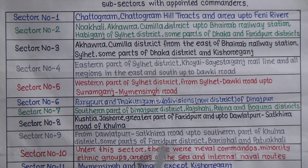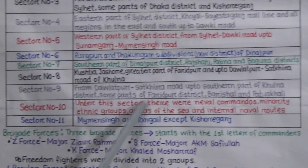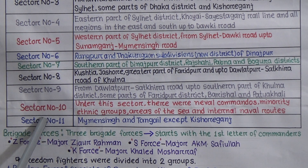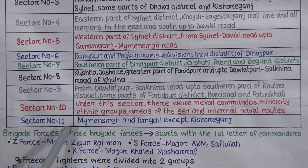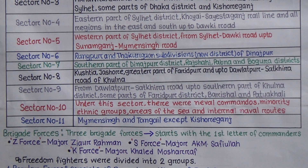Sector 10 included naval commandos, minority ethnic groups, areas of the sea, and internal naval routes. Sector 11 covered Mymensingh and Tangail, except Kishoreganj. So students, these are the 11 sectors and their respective areas. Please read this chart carefully to learn all sectors from 1 to 11. This is very important for your creative questions, MCQ, and general knowledge.